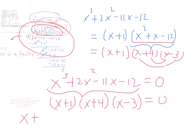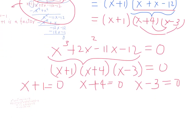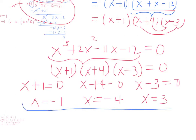Since we're looking for x values that make the polynomial equal to 0, we write x plus 1 times x plus 4 times x minus 3 equals 0. So x plus 1 equals 0 gives x equals negative 1; x plus 4 equals 0 gives x equals negative 4; and x minus 3 equals 0 gives x equals 3. So the values of x are negative 1, negative 4, and 3.